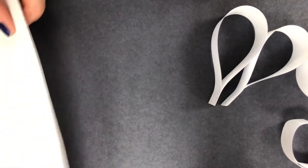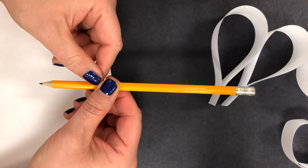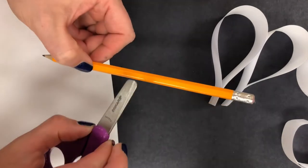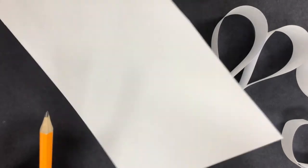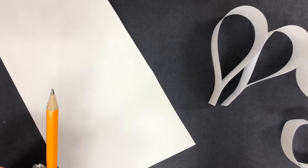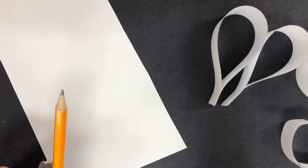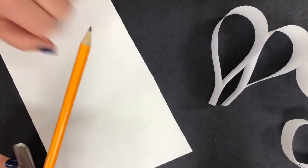For the curl you're going to need a pencil, scissors, and paper. This type of drawing paper, the thin kind, I think works the very best. Thicker paper doesn't tend to curl as well. I'll give you a moment to make sure you have a pencil, scissors, and some thin drawing paper.